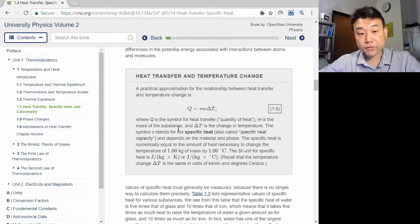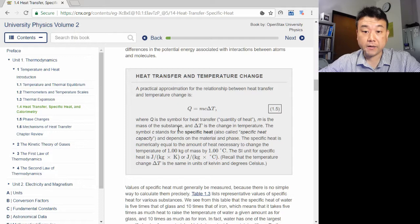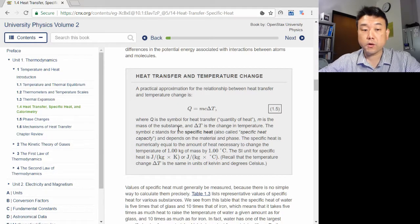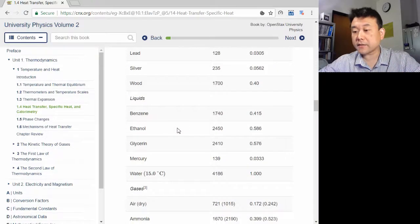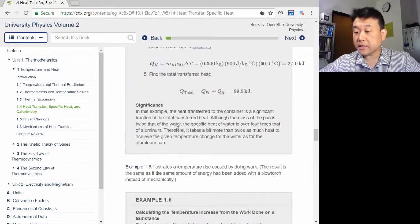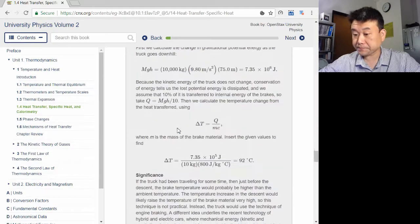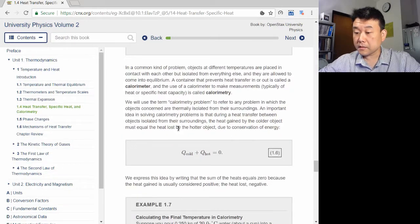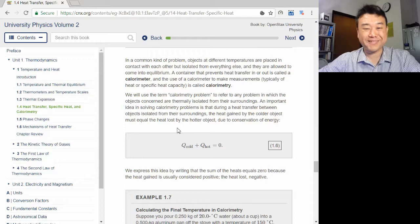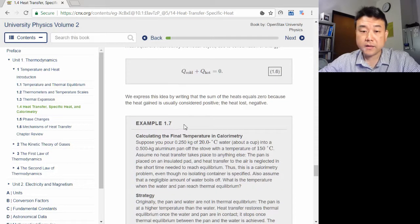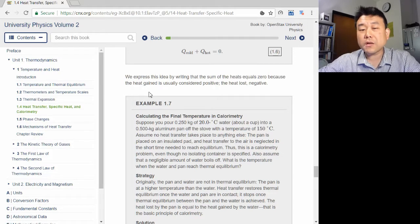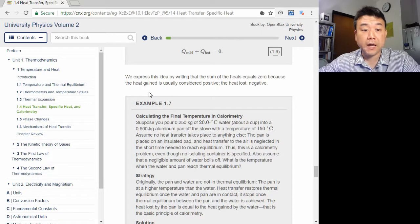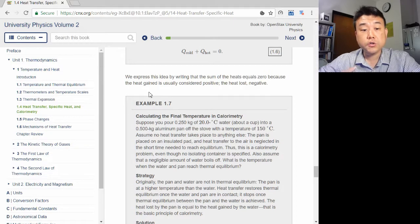In calorimetry, this basic intuitive idea is combined with the conservation of energy. Heat transferred out of an object is equal to heat transferred into another object to form calorimetry problems. Take a look at the examples here and try out the homework questions. While we won't spend a lot of time on calorimetry questions, you should know how to do these calculations when needed.